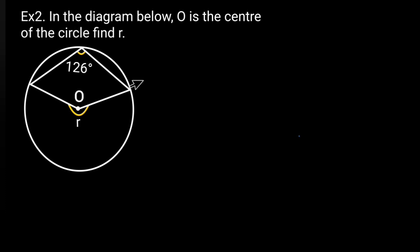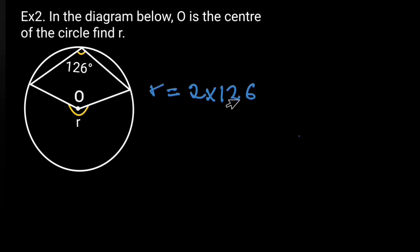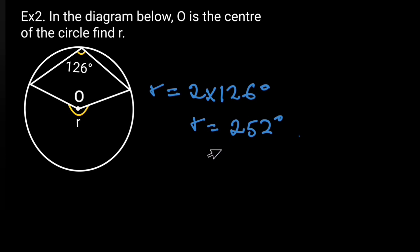Example 2: In the diagram below, O is the center of the circle. Find R. R is equal to 2 times 126, which gives R equal to 252 degrees. Reason: angle at the center is twice the angle at the circumference.